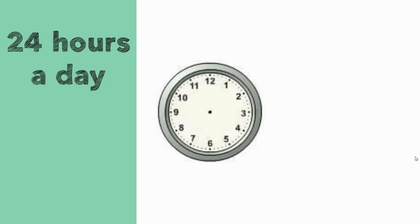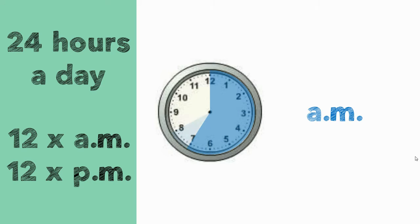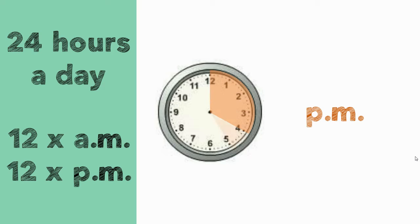You will also remember that there are 24 hours in a day but only 12 digits on a clock. That's why we use a.m. and p.m. When an hour hand goes round the clock for the first time, we say it is a.m. And when an hour hand goes round the clock for the second time, we say it is p.m.